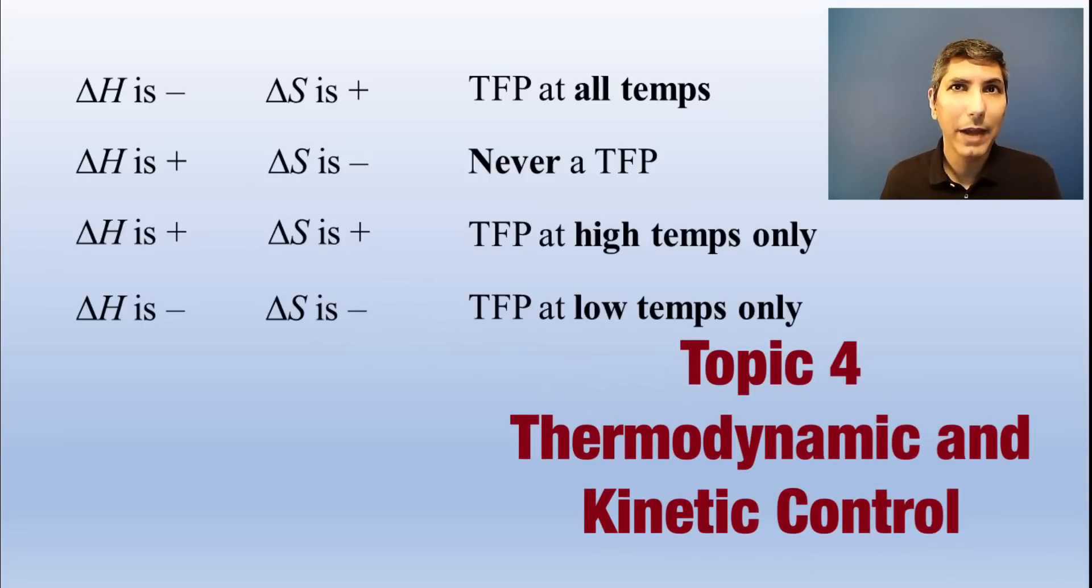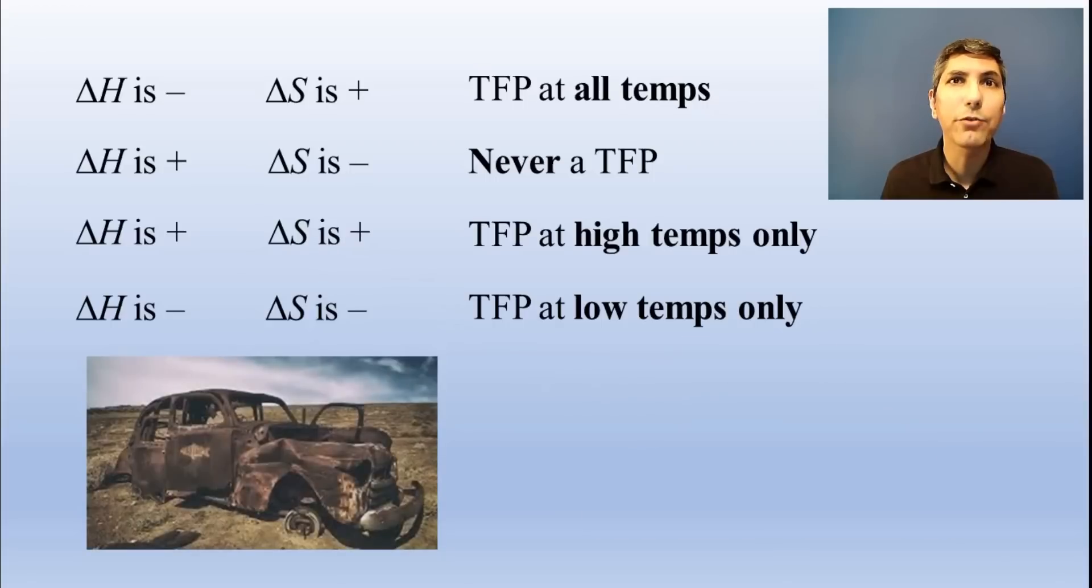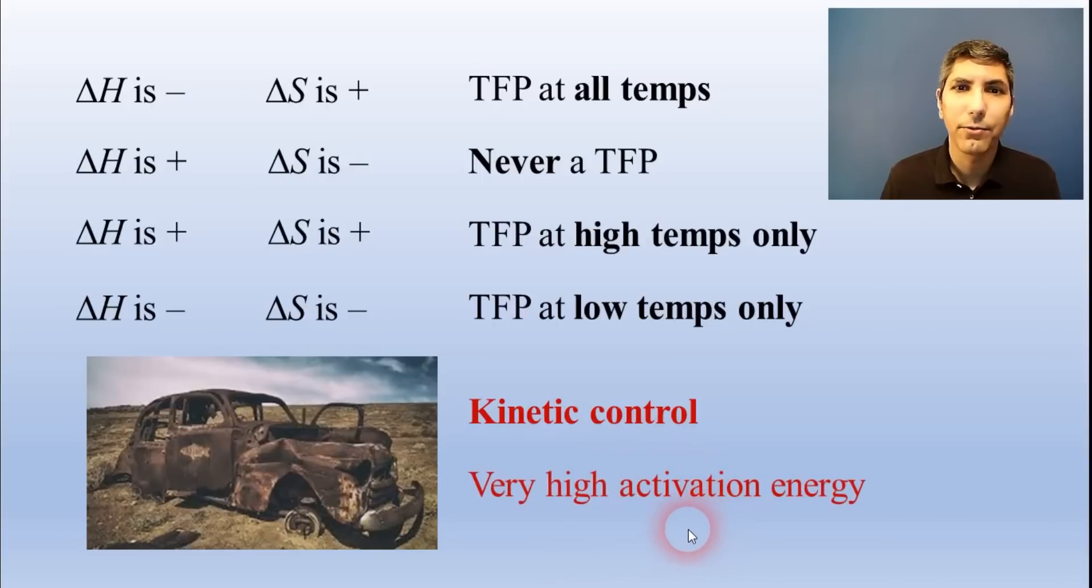Sometimes you'll encounter a reaction that has an almost immeasurably slow rate, like the rusting of a car. It's pretty much taking place on its own, so we know it's thermodynamically favored, but it's so slow that we can't even measure the rate. This is called being under kinetic control. This usually happens when a reaction has a very high activation energy. It's not at equilibrium, and it hasn't stopped. It's just very slow kinetic control.